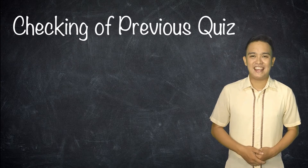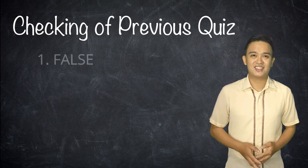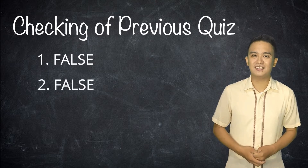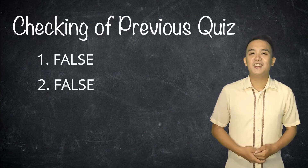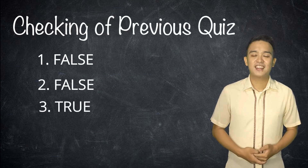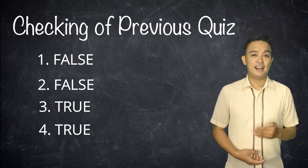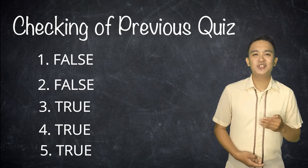Here is number one — the answer is false. Number two — false. Number three — the correct answer is true. Number four — true is the answer. And the last number — the correct answer is true. Did you get a perfect score? For those who got a score lower than five, it's okay. Just do better next time.